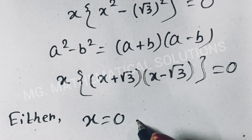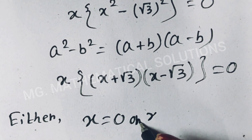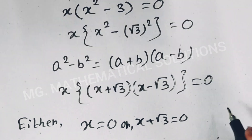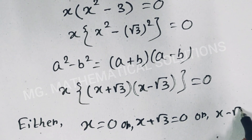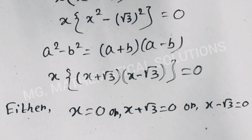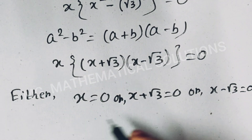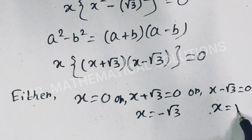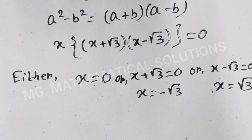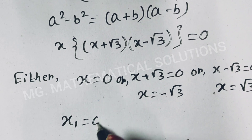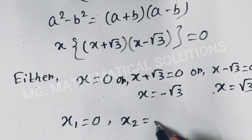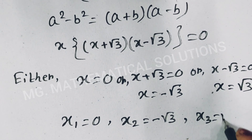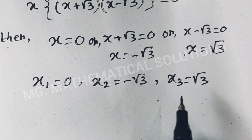So either x equals 0, or x plus root 3 equals 0, or x minus root 3 equals 0. Therefore x equals minus root 3 and x equals plus root 3. So x₁ equals 0, x₂ equals minus root 3, and x₃ equals root 3. Now we check these three values.